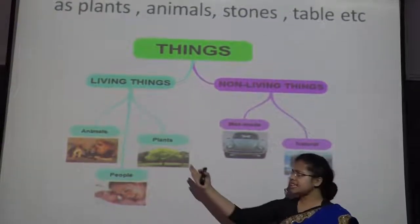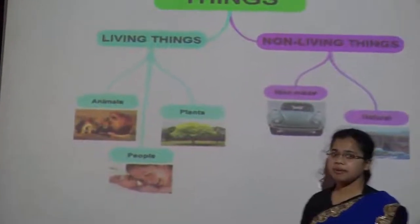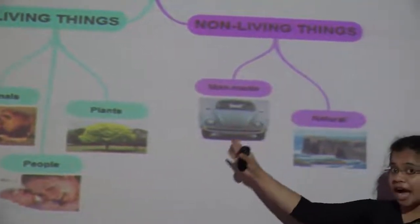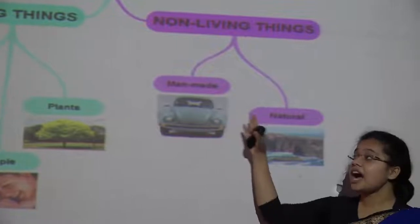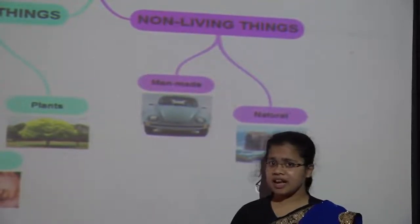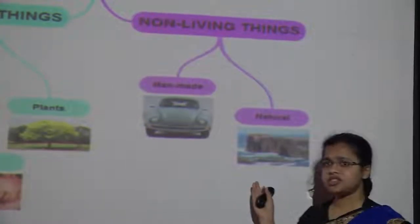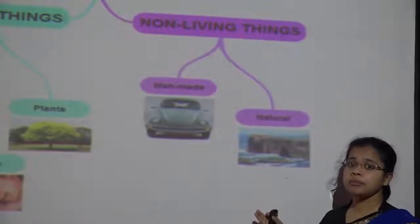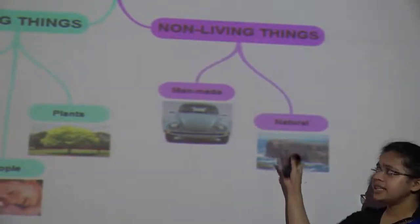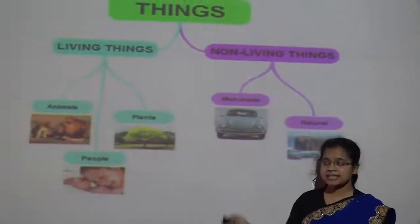Living things include animals, plants, and people. Non-living things include man-made and natural things. Man-made things include cars and buses and tables, and natural things include the sun, moon, and air. So these are the divisions of things.